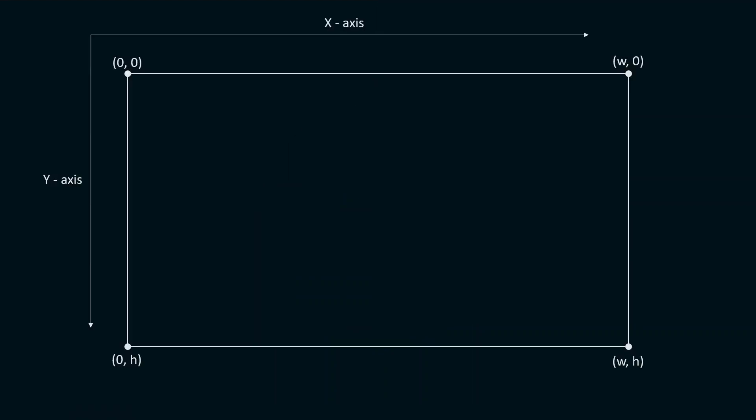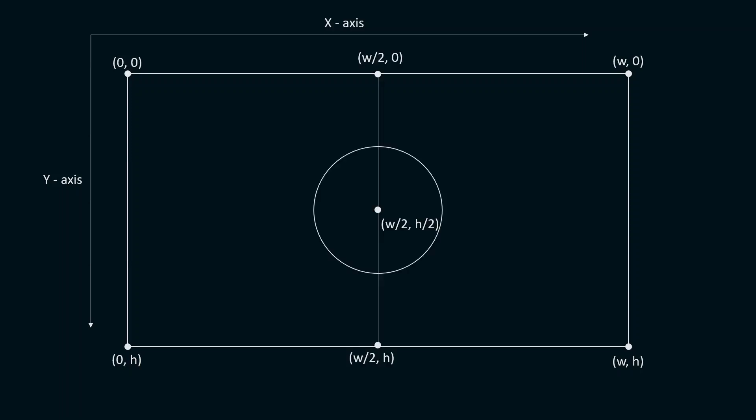Just to remind you of the coordinate system in Pygame: the top-left corner of the screen is the origin. The x-axis is in the horizontal direction and the y-axis is in the vertical direction. Therefore, the points on the x-axis range from 0 to the width of the screen, and the points on the y-axis range from 0 to the height of the screen. With this, you should be able to figure out how I came up with the coordinates of the endpoints of the line and the center of the circle.